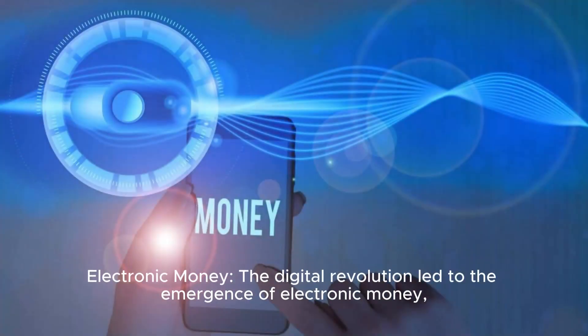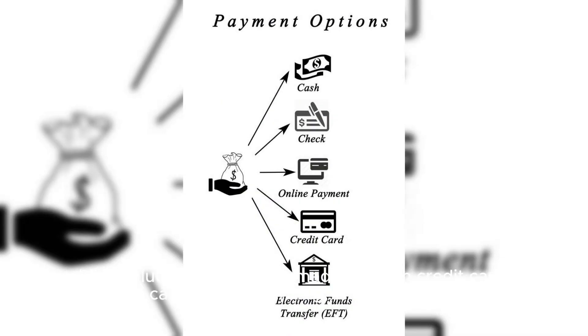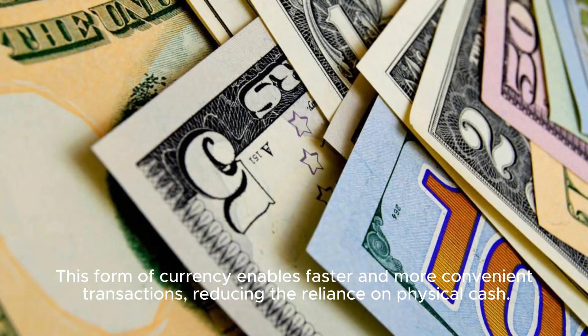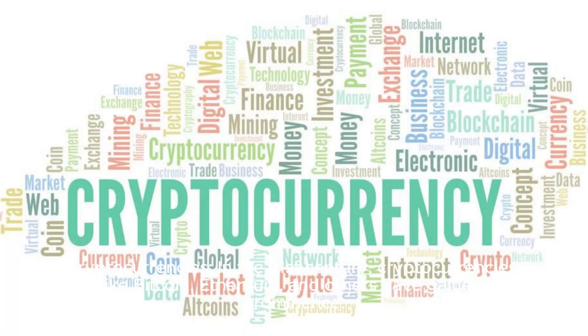Electronic Money: The digital revolution led to the emergence of electronic money, which includes transactions made through credit cards, debit cards, online banking, and digital wallets. This form of currency enables faster and more convenient transactions, reducing the reliance on physical cash.